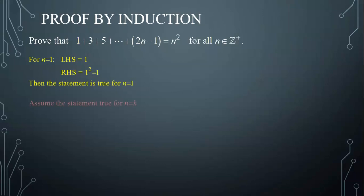Then I assume the statement true for rank k, which means replacing n by k in the given statement, we have the sum 1 plus 3 plus 5, all the way to 2k minus 1, assumed to be equal to k squared.